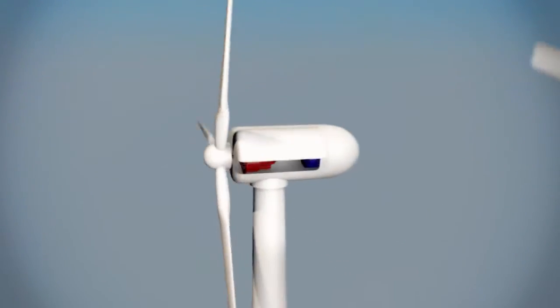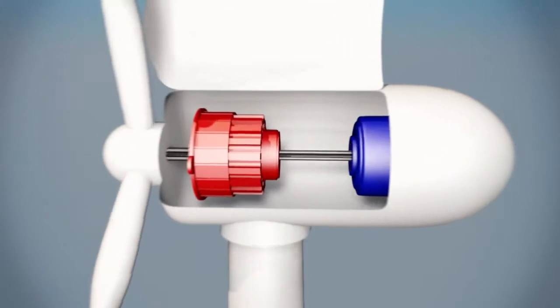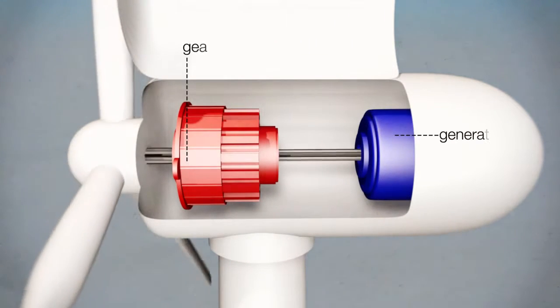Wind turbines have rotors, which are moved by the power of the wind. A generator then creates electricity.